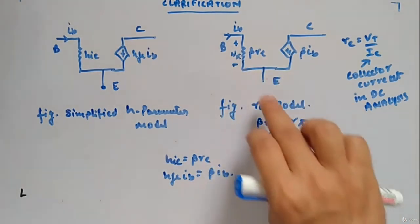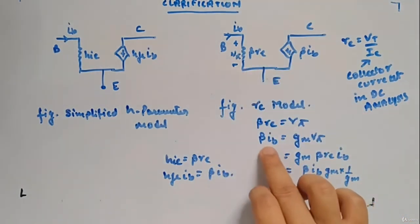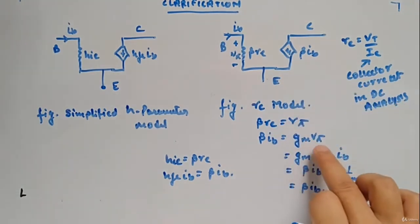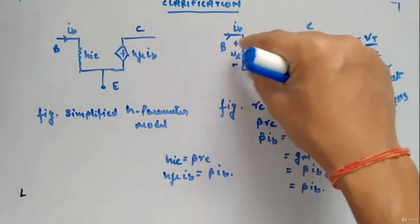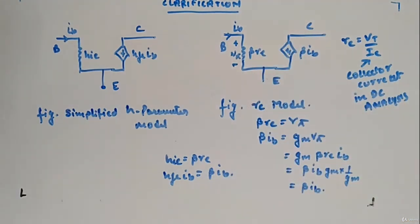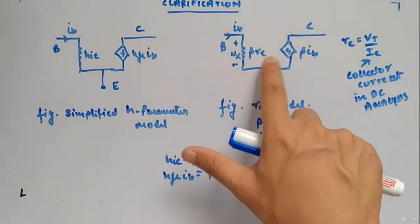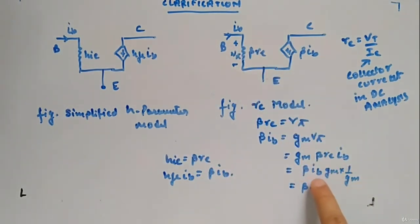And beta ib is sometimes written as gm vpi, where vpi is the drop across this beta. So you can write it as gm into beta re into ib, which equals beta into ib. So beta ib. Gm re can be written as one by gm, so gm gets cancelled. This is essentially the same thing.